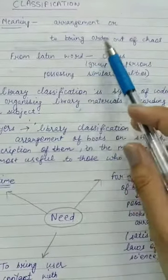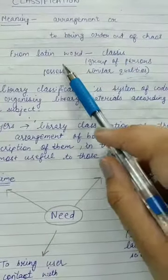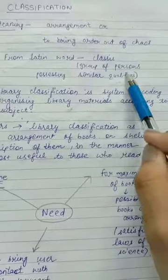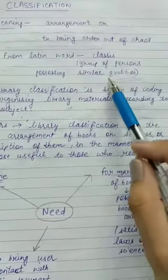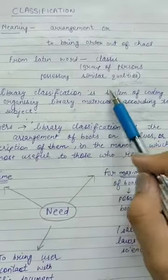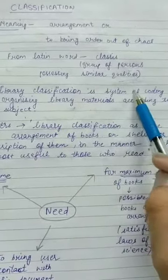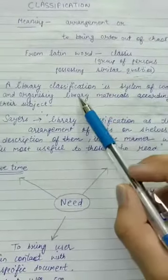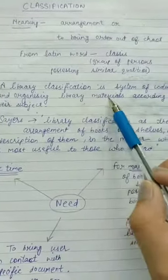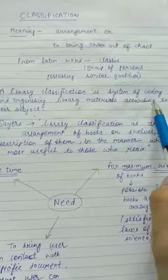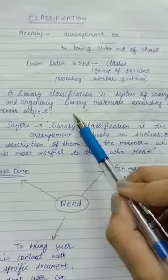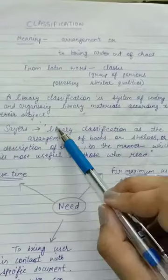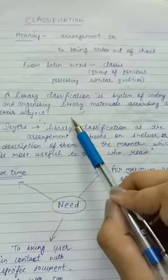The word classification is derived from the Latin word which means 'classes.' Classes means the group of persons possessing similar qualities. In the case of library, a library classification is a system of coding and organizing library materials according to their subject.